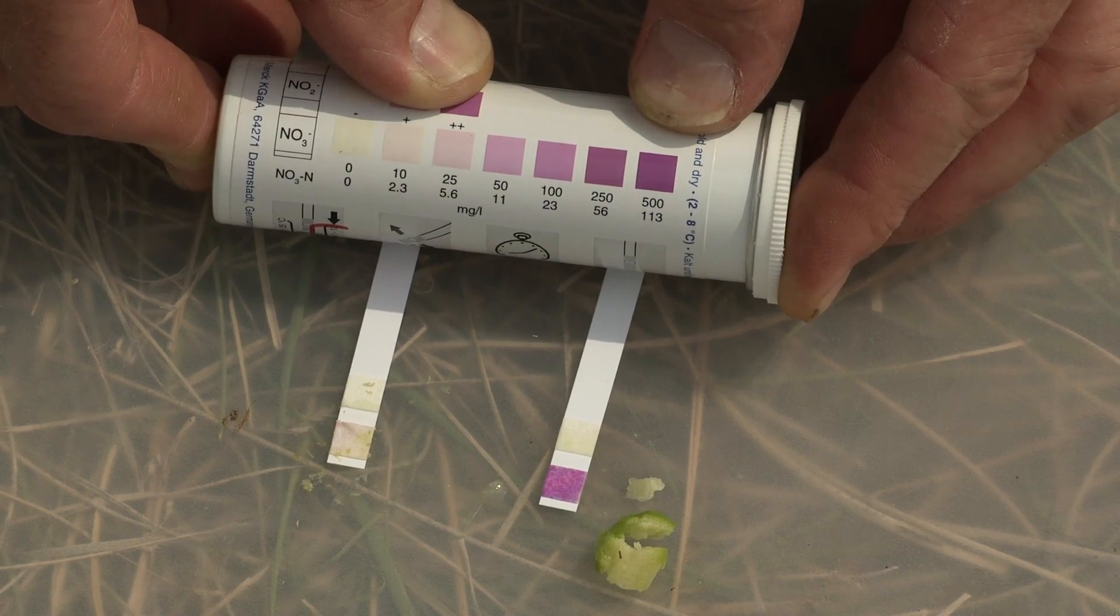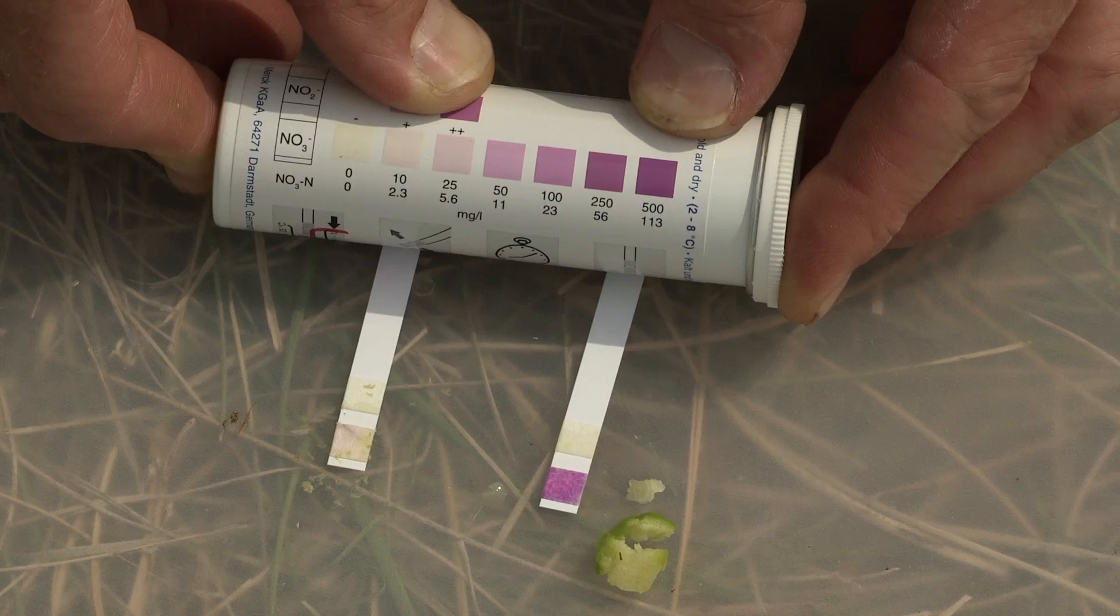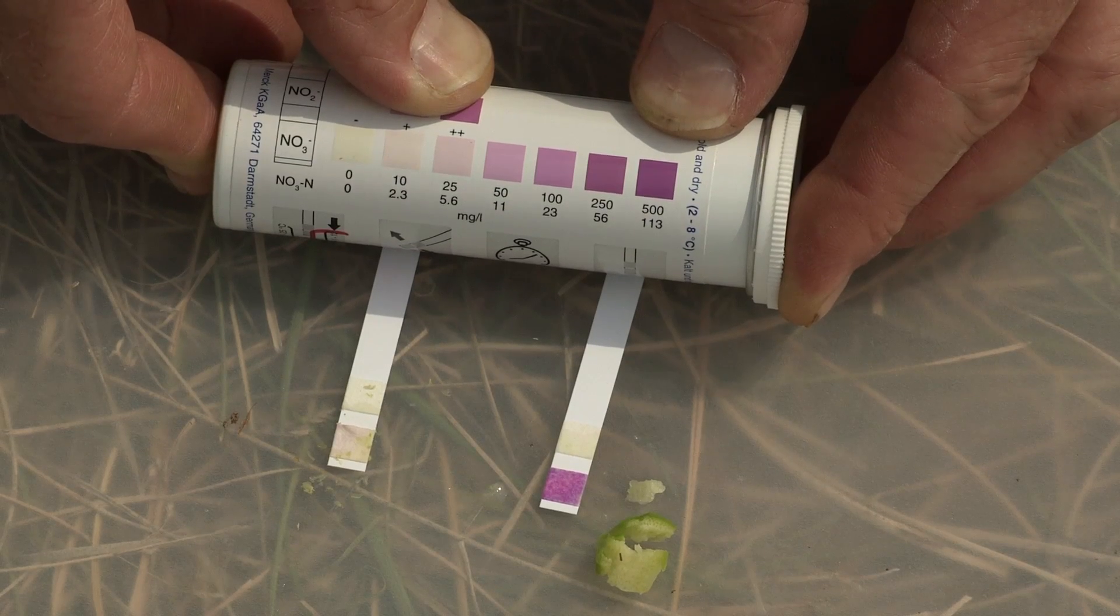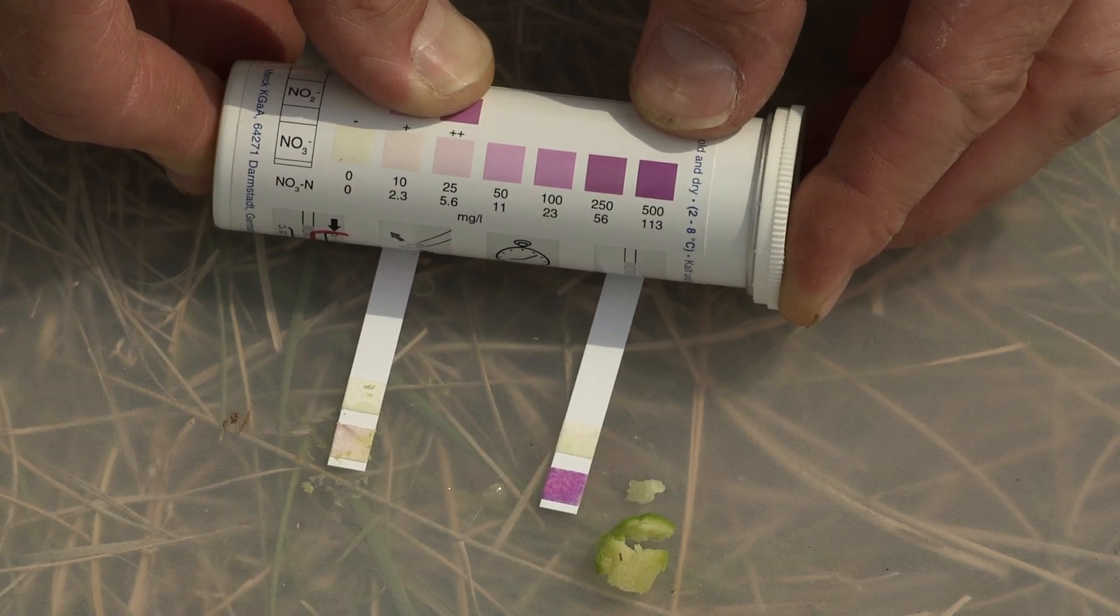Producers then should let their county agents help them sample the field and send it to the veterinary diagnostic lab at University of Kentucky for testing, to find out the actual level.